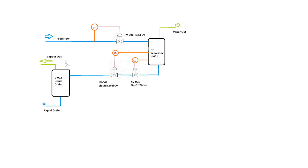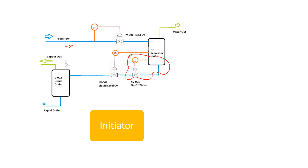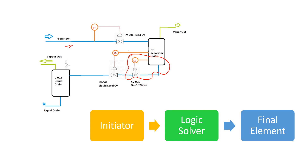As a recap, this is an HP separator where feed flow comes in and goes to drain. The critical level of the HP separator — if it goes high, it will overflow and incidents can occur. The safety loop consists of an initiator, a logic solver, and a final element. The initiator is a level switch, the logic solver is a safety PLC, and the final element is an on/off valve — all in one-out-of-one configuration.